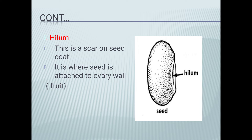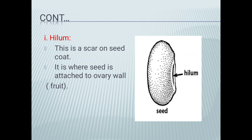Parts of seed coat: Hilum — it is the scar on the seed coat and it is the point where the seed was attached to the ovule, that is now the fruit. Micropyle — at one end of the hilum there is the micropyle. It is the same opening through which the pollen tube entered the ovule. The seed uses the micropyle for the absorption of water.